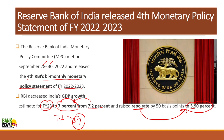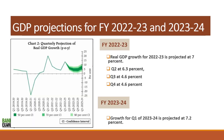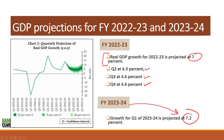For the GDP projections: the real GDP growth for FY 2022-23 is projected at 7 percent overall. For Q2 it is forecasted at 6.3 percent, Q3 at 4.6 percent, and Q4 at 4.6 percent. For the financial year 2023-24, the GDP is forecasted at 7.2 percent.